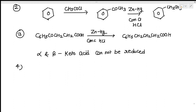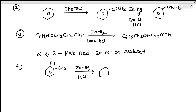Next, it can be used for the reduction of phenolic carbonyl compounds. If a compound contains a phenolic OH group and a CHO group, it can be reduced with Zn/Hg and HCl, giving the OH group and a CH3 group.